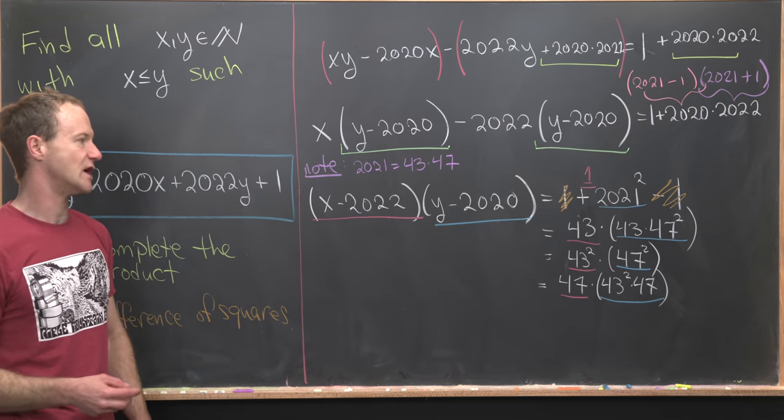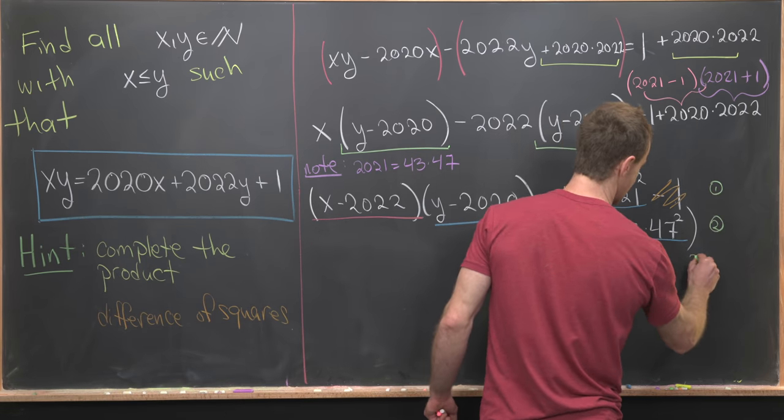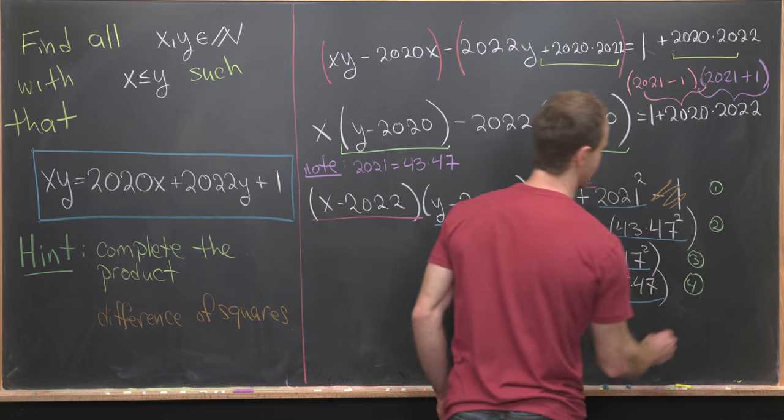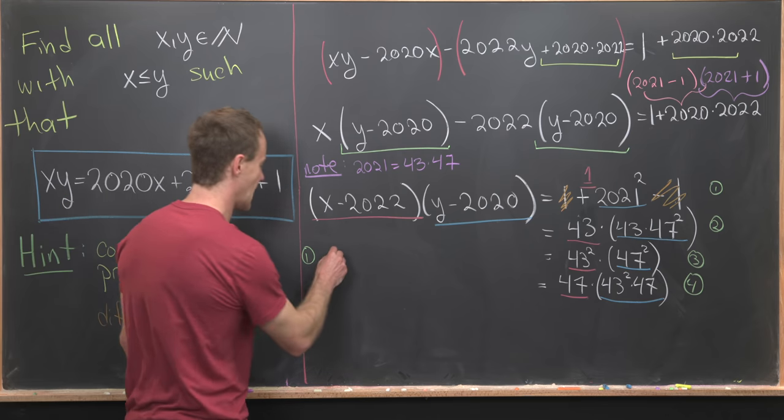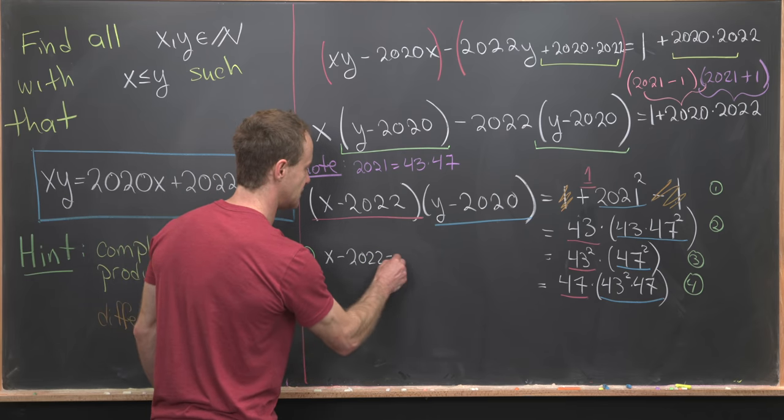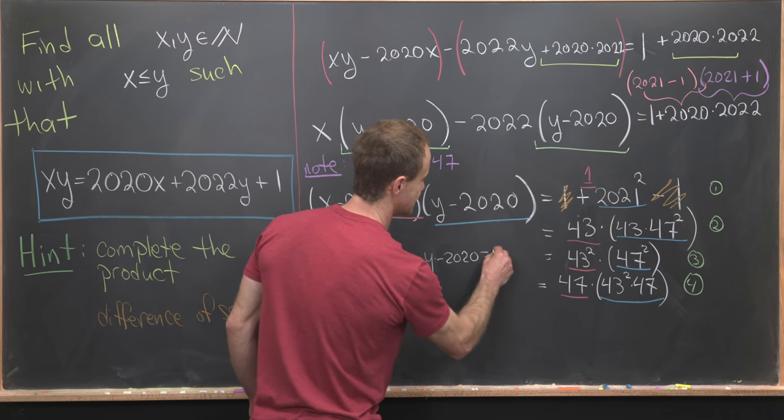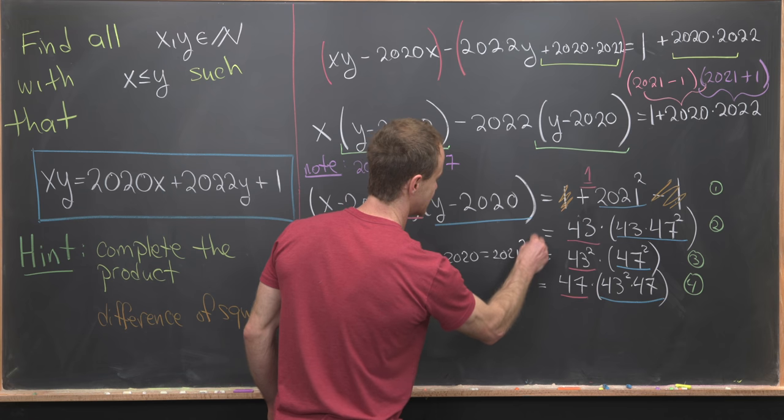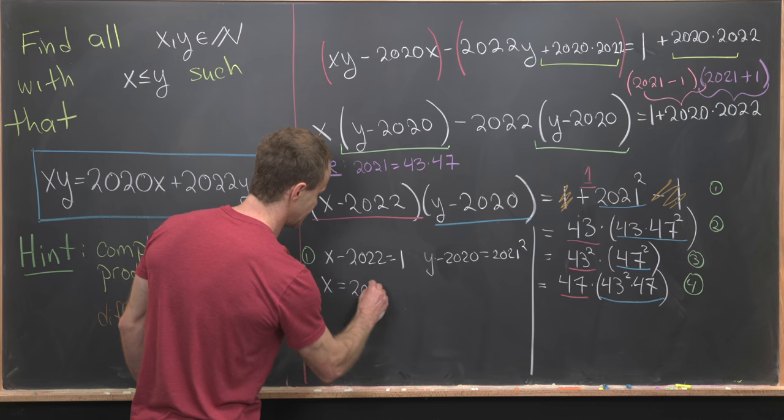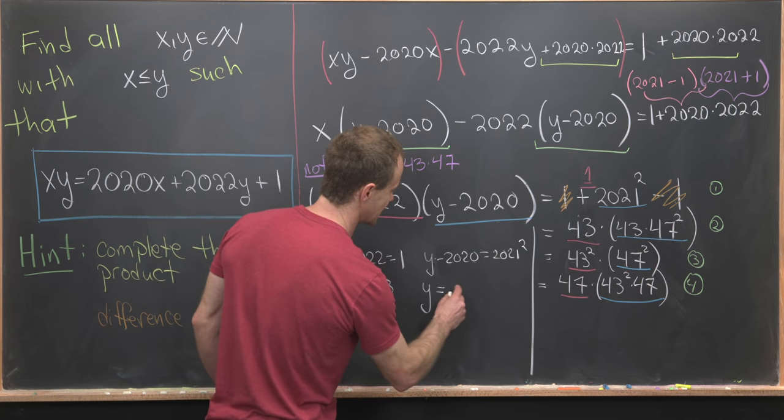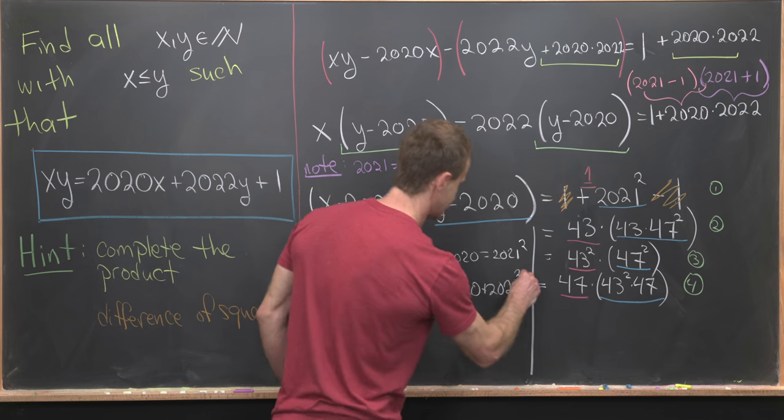So that gives us four sets of equations to work with. So let's number those. So we've got this first factorization, the second, the third, and the fourth. And let's notice that this first factorization will give us a solution, and that will correspond to x - 2022 = 1, and y - 2020 = 2021². So obviously, we can solve for x. x is going to be equal to 2023, and then y is going to be equal to 2020 + 2021².